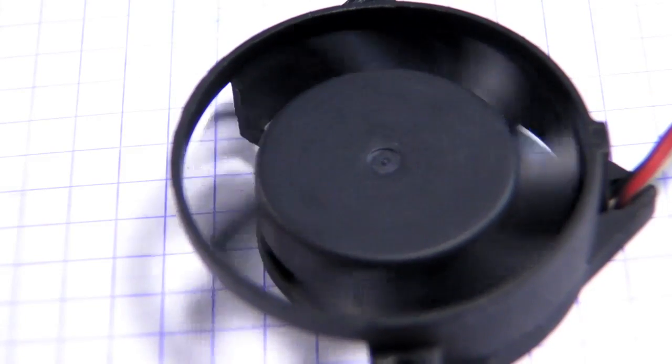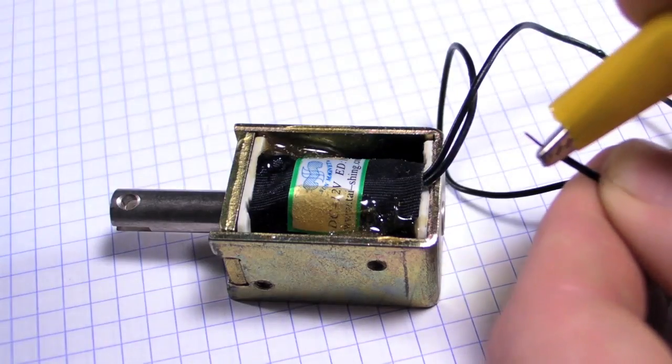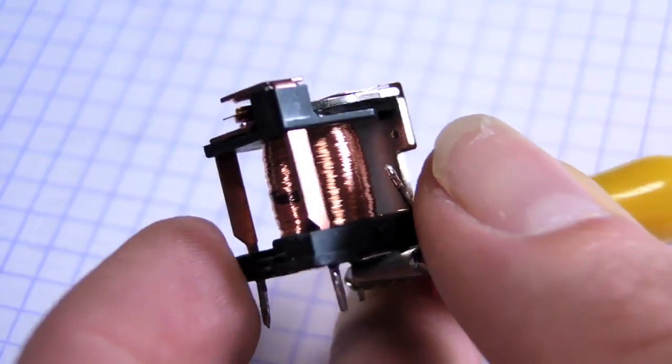And electromagnets are used everywhere. Well, a lot of places. Motors, solenoids, relays, tons of stuff. They're super useful.